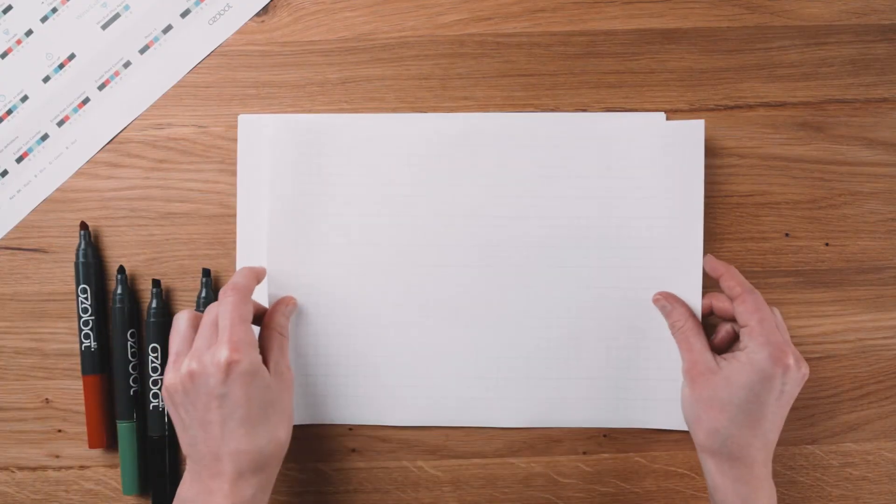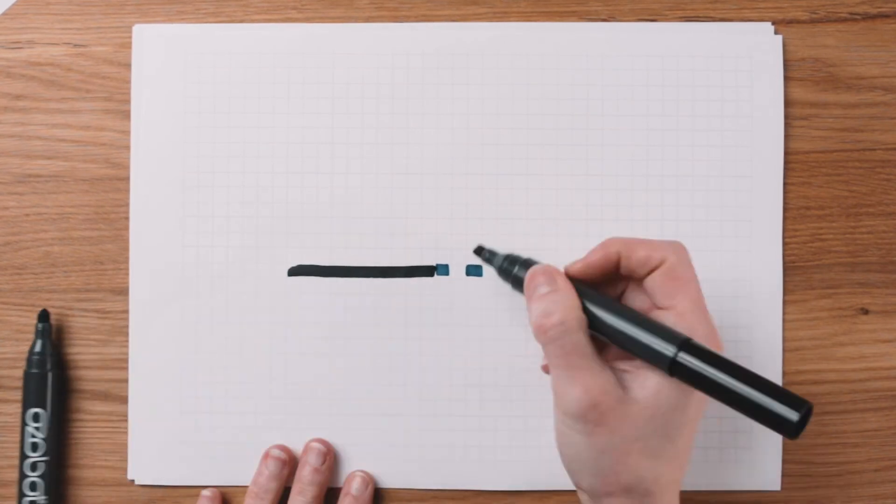Practice drawing code squares with 1 fourth inch graph paper if you're having trouble.